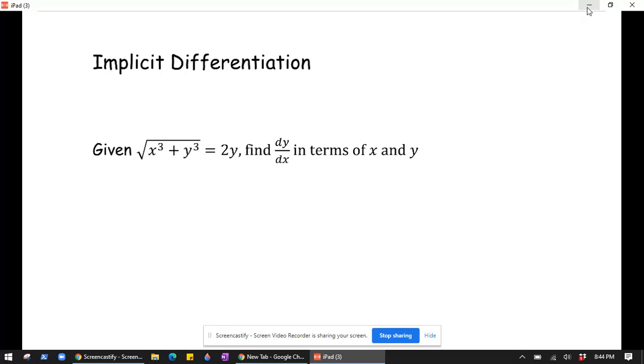So the first thing we're going to do is represent this as an exponent. I'm going to write that as x cubed plus y cubed to the 1/2, right, that is 2y. And then we're going to take the derivative of both sides with respect to x.